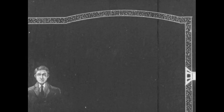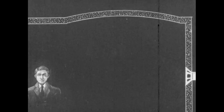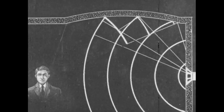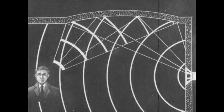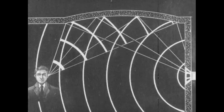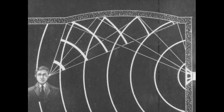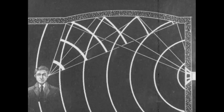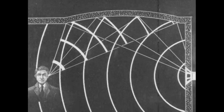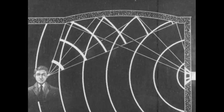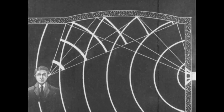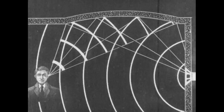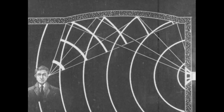Curved surfaces in auditoriums are often detrimental to good room acoustics. Such surfaces reflect and focus the sound waves, producing loud echoes that follow the original sound by a fraction of a second, thus interfering with the clear reception of the sound.